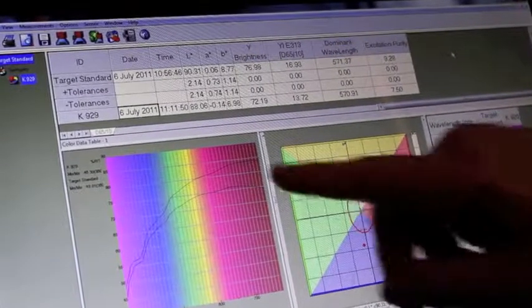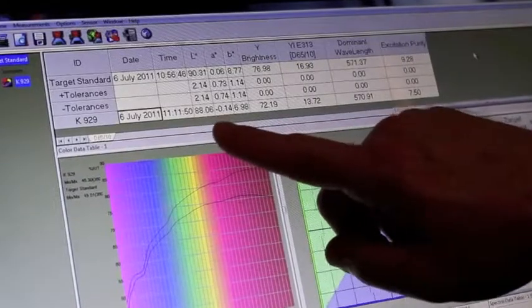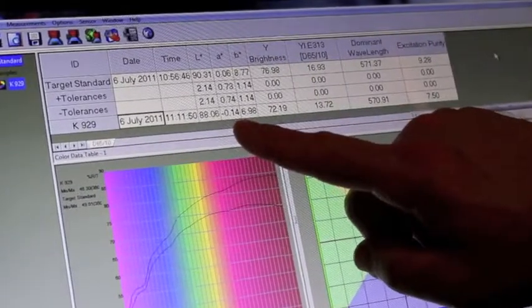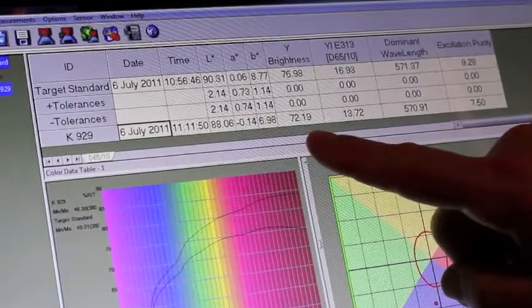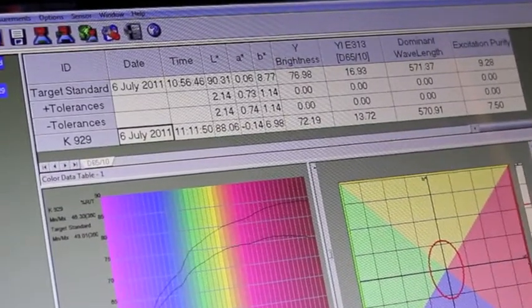And after taking a measurement, it shows the lightness, a slight greenness with our A value, the yellow value of nearly seven, and along with its brightness and yellowness index values.